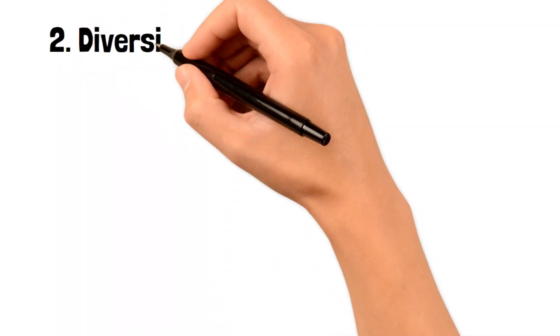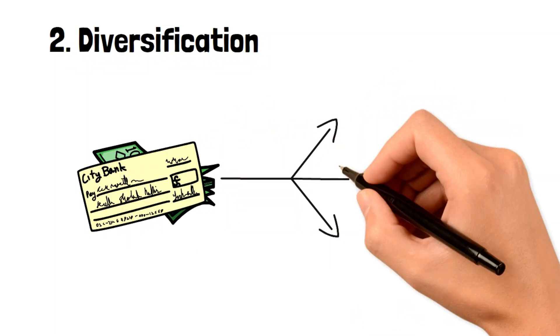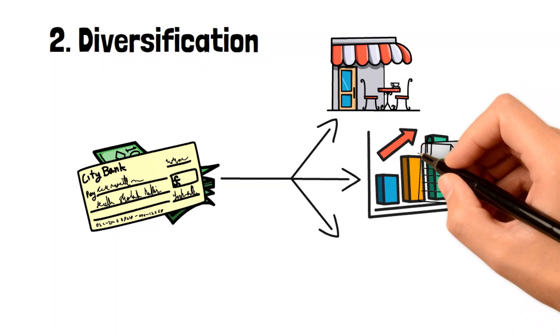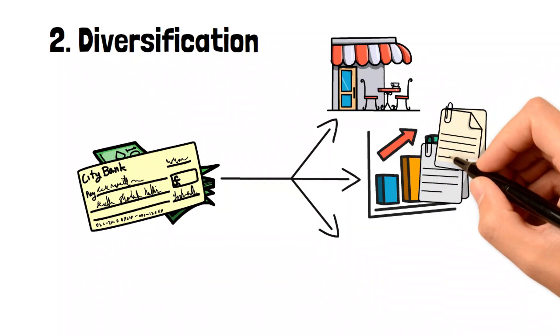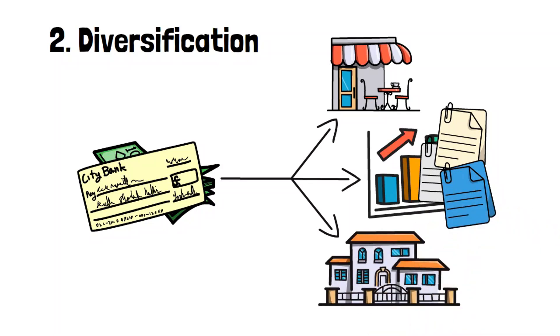The second rule is like a shield against uncertainty. It's called diversification. This means spreading your money across different types of businesses and industries. By doing this, you create a safety net. If one area struggles, others might do well, balancing things out and giving you some relief.